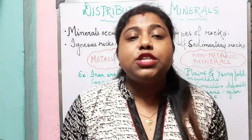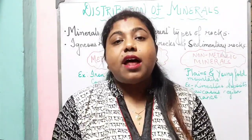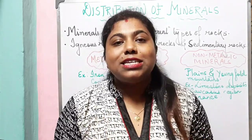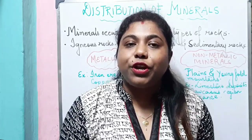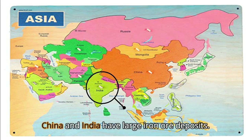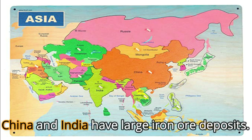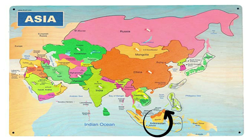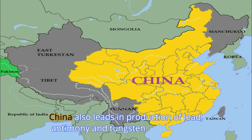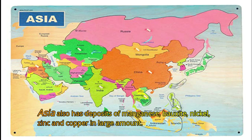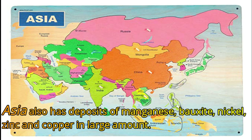Now let us know about the minerals available in different continents. There are seven continents in our world, and today we are going to discuss the minerals found in each. In Asia, China and India have large iron ore deposits. The continent produces more than half of the world's tin. China, Malaysia, and Indonesia are among the world's leading tin producers. China also leads in production of lead, antimony, and tungsten. Asia also has deposits of manganese, bauxite, nickel, zinc, and copper in large amounts.